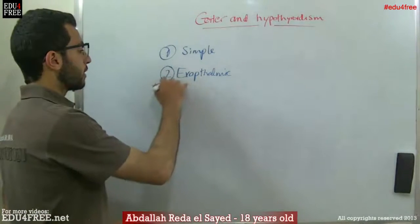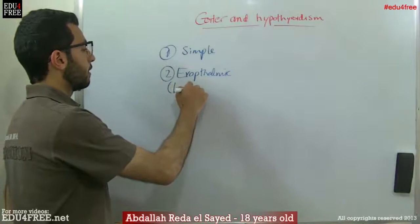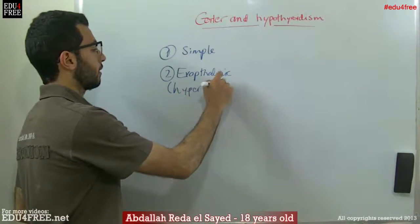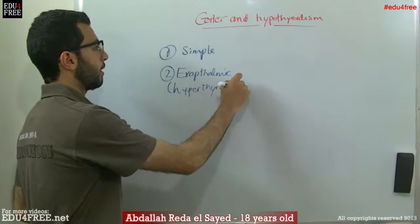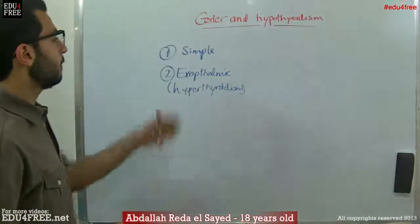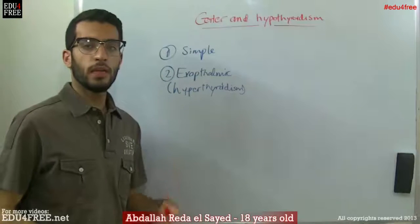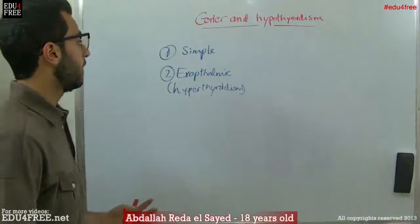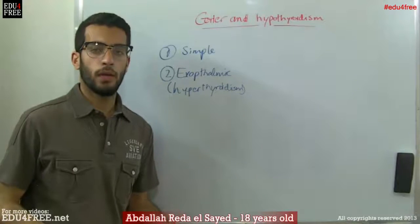The Simple Goiter can be contrasted with Hypothyroidism. The Simple Goiter occurs according to iodine deficiency in the food supply, in the water, and the air.